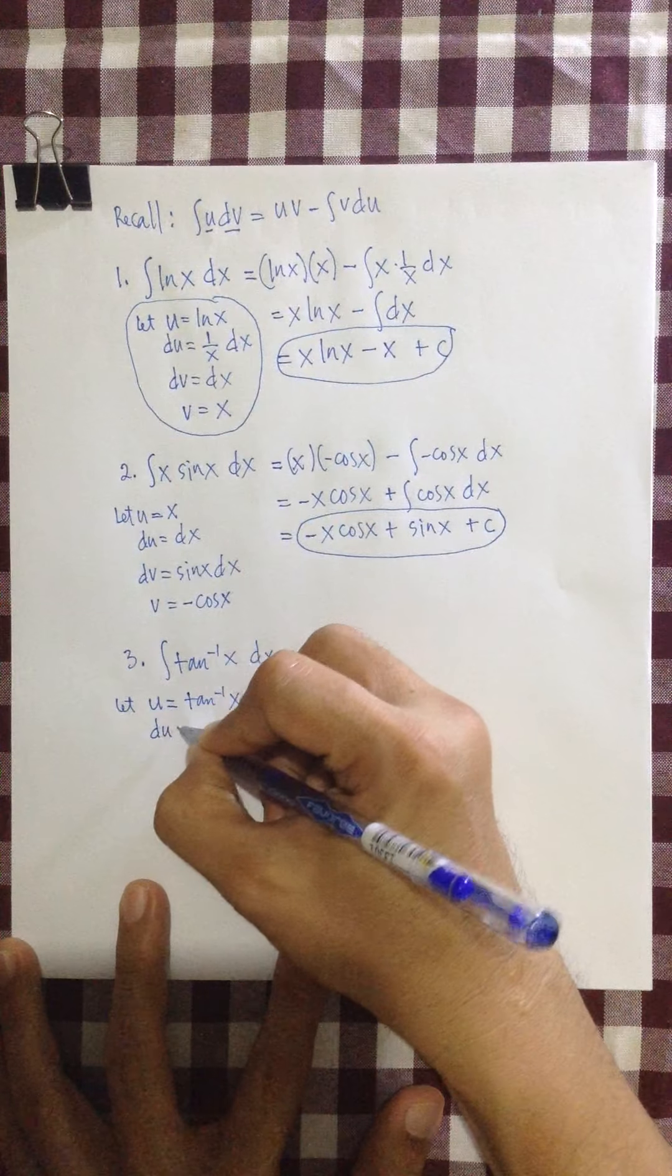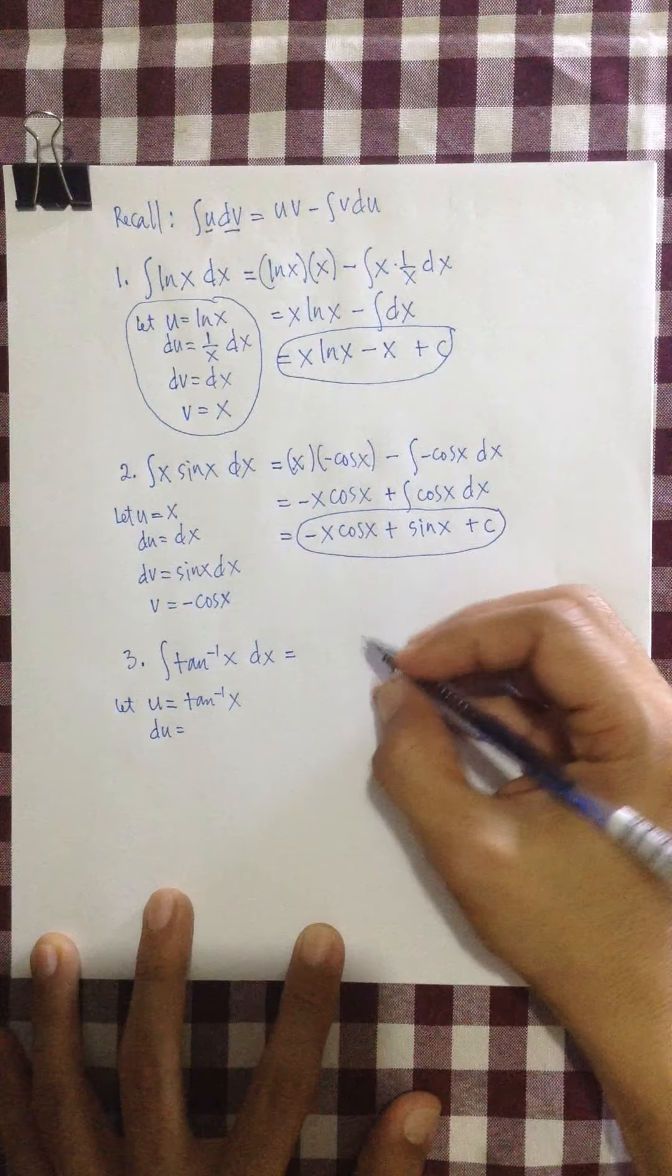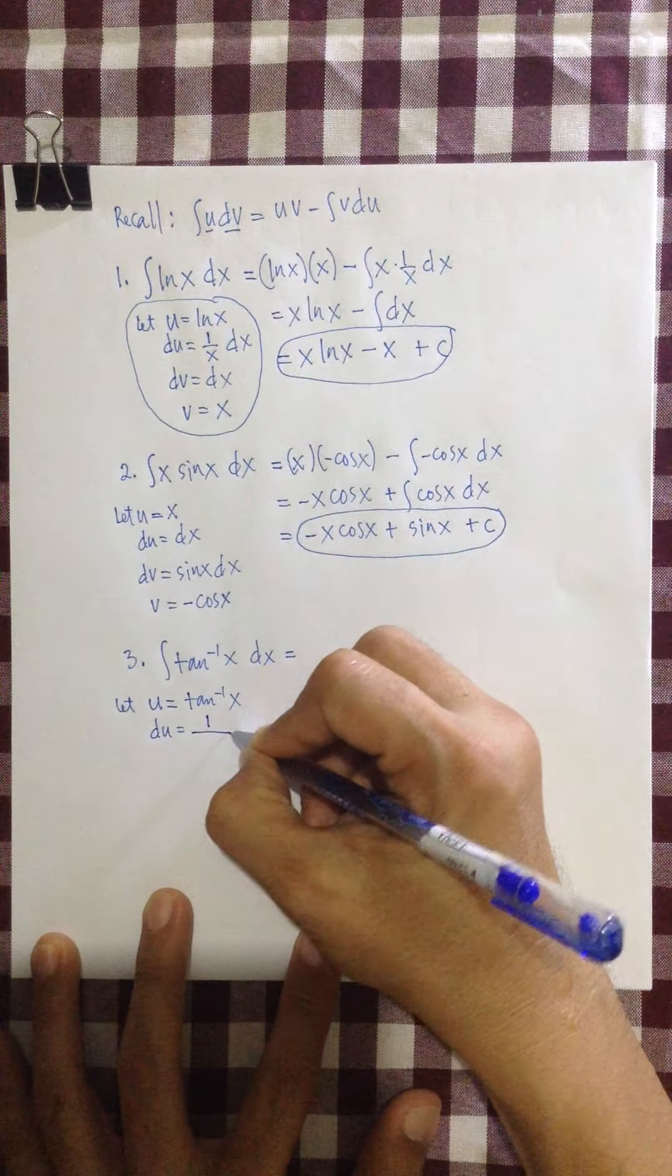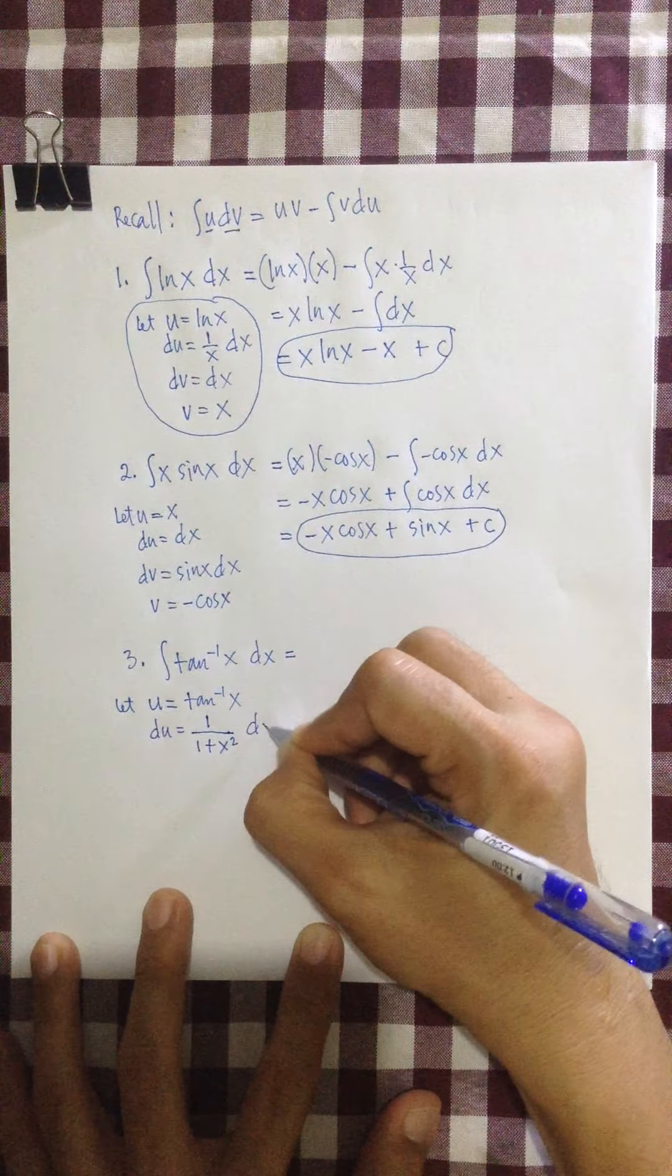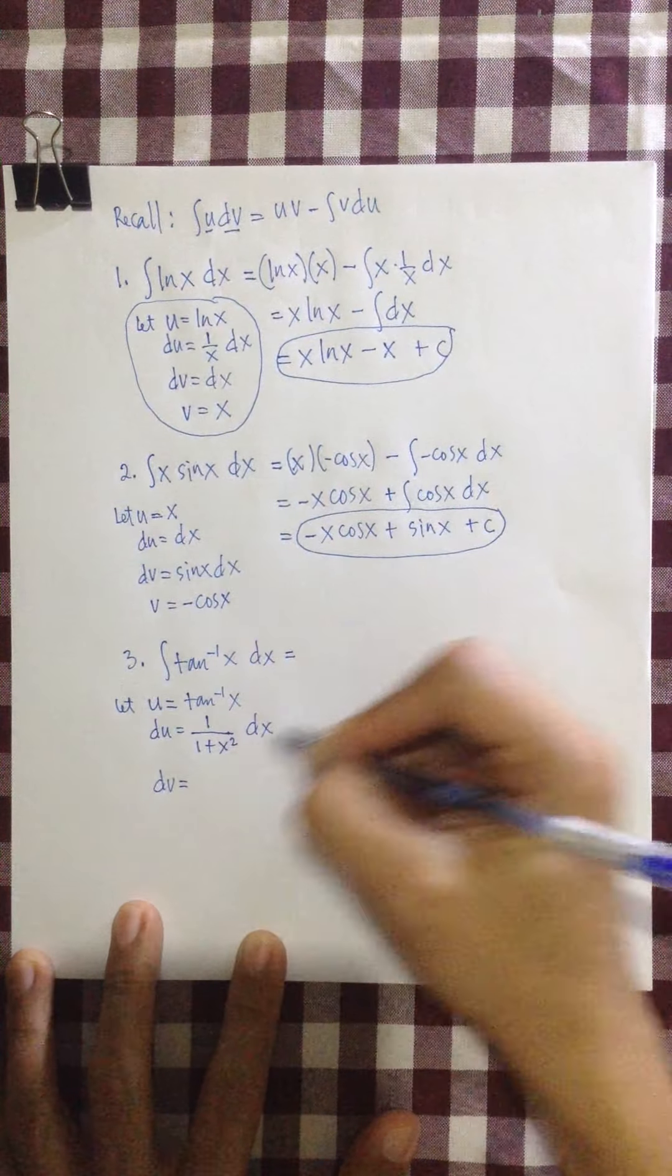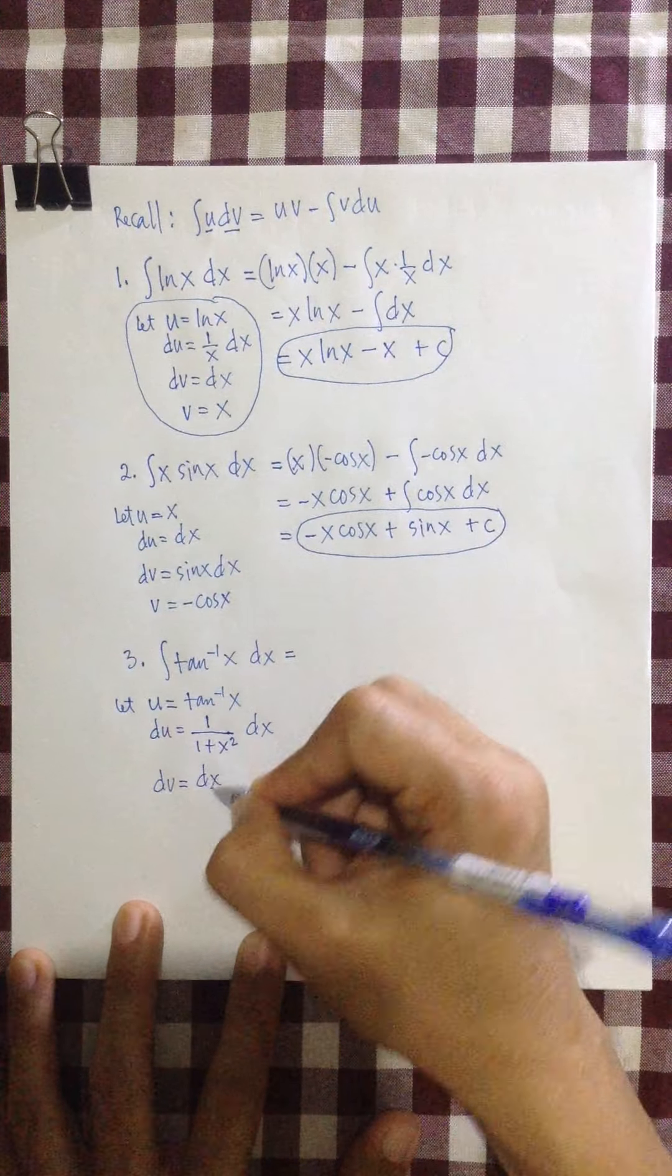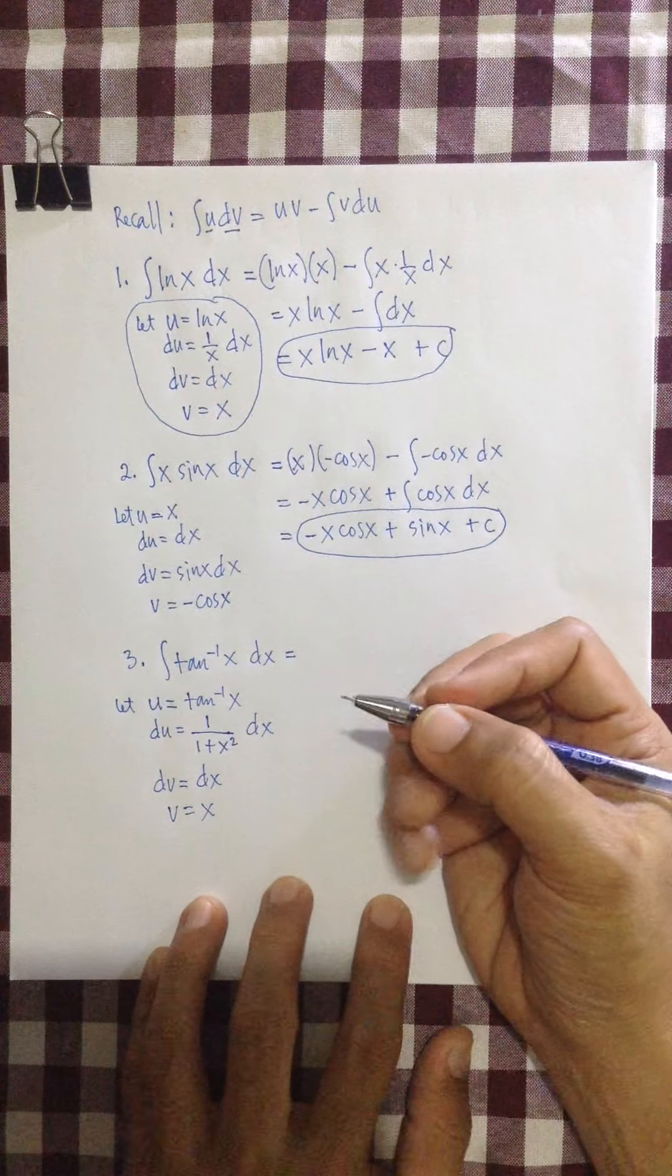So if your u is equal to tangent inverse of x, then your du is... Remember, what is the derivative of tangent inverse of x? So remember that. That's actually equal to 1 over 1 plus x squared dx. And your dv is, guess what? Of course, that's dx. And integrating both sides, we have v equals x.